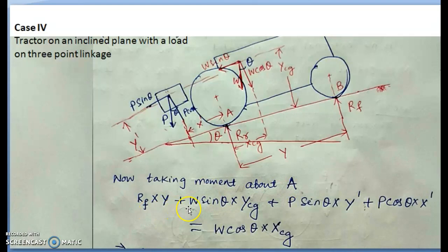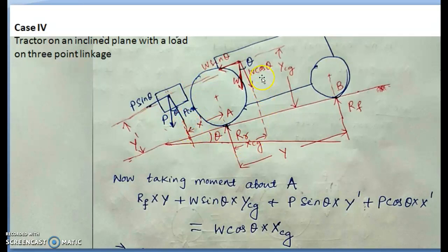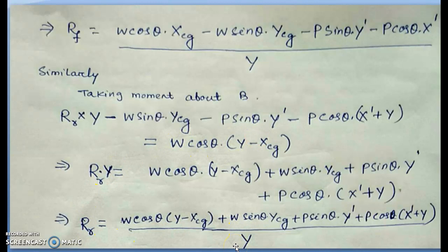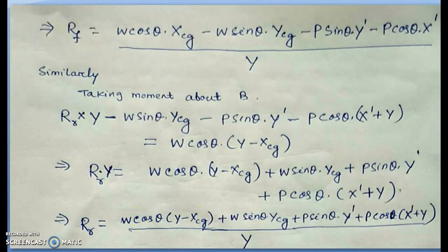Taking moment about A: RF × Y + W·sin(theta)·Y_CG + P·sin(theta)·Y-dash = W·cos(theta)·X_CG + P·cos(theta)·X-dash, allowing RF to be solved. Similarly, taking moment about B gives RR = [W·cos(theta)·(Y − X_CG) + W·sin(theta)·Y_CG + P·cos(theta)·(X-dash + Y) + P·sin(theta)·Y-dash] / Y. Both RF and RR can be calculated from these equations.